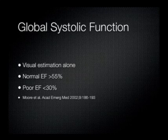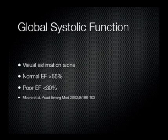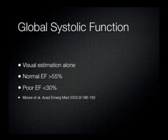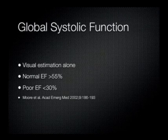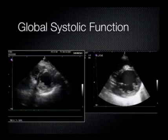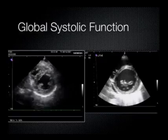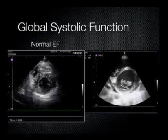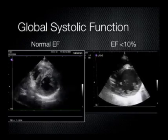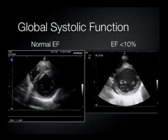With experience, it's possible to determine gross left ventricular function just by visual estimation. Calculating an ejection fraction in a full cardiac ultrasound is complicated — it involves measurements of the left ventricular cavity dimension and wall thickness, which is really beyond the scope of a focused cardiac exam. But it has been shown in the literature that a gross ejection fraction estimation can be accurately obtained. Here are two clips: one demonstrates a normal ejection fraction, and the other demonstrates a heart with an ejection fraction less than 10%, both shown in parasternal short axis.